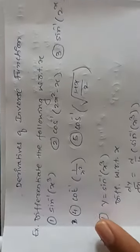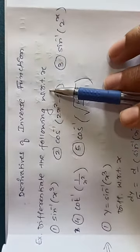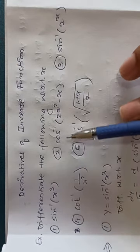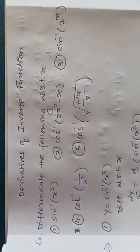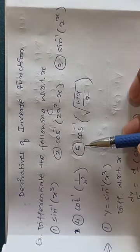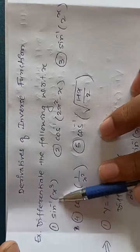Now, some examples. Derivatives of inverse functions - we started this point. Differentiate the following with respect to x: sin inverse of x cube, cos inverse of 2x square minus x. These are the examples we have. Now if you observe these examples, you'll understand that these examples are composite examples.